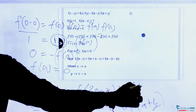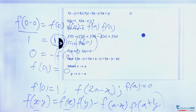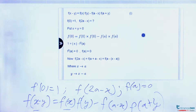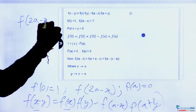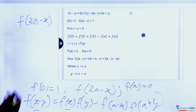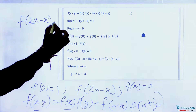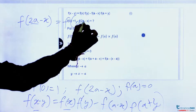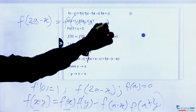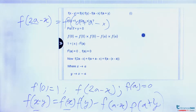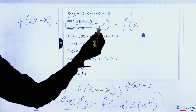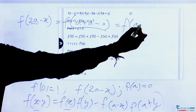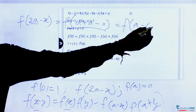Now we know f(a) = 0, which we will use in further solving. We have to find f(2a-x). We can split 2a as a+a, so f(2a-x) = f(a+a-x) = f(a-(x-a)). This converts it into the form f(x-y), where we can apply our given functional relation.